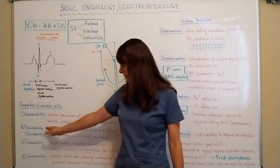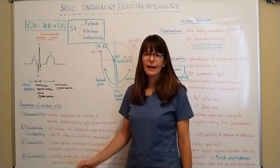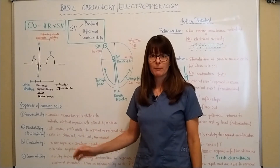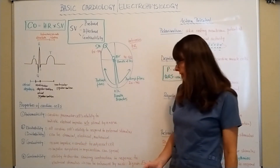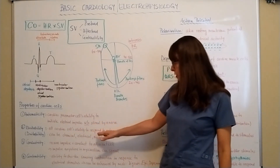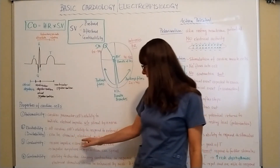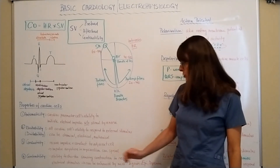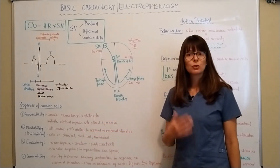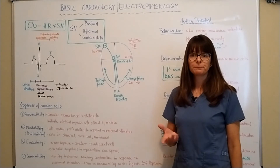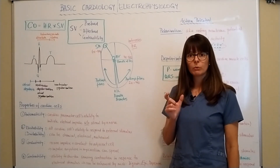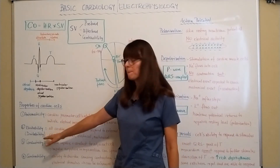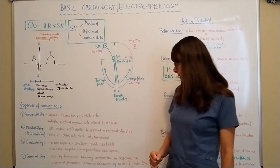Next we have excitability, which goes hand in hand with irritability. All cardiac cells have the ability to respond to an external stimulus that can be chemical, electrical, or mechanical. This relates back to the membrane potential — chemical and electrical stimuli might be due to imbalances in potassium, magnesium, sodium, or calcium; if those levels are abnormal, that can be the cause of dysrhythmias. We need a certain level so that cells are excitable, but not overly irritable.